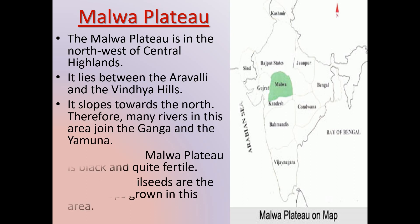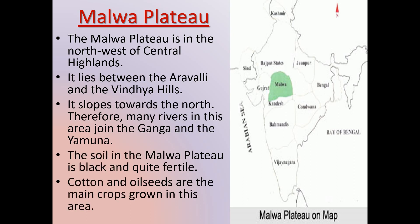The Malwa Plateau slopes towards the north. Therefore, many rivers in this area join the Ganga and the Yamuna. The soil in the Malwa Plateau is black and quite fertile. Cotton and oil seeds are the main crops grown in this area.